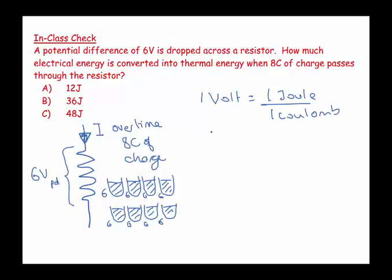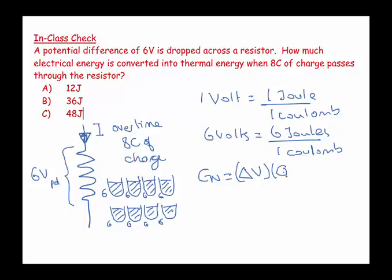would mean that 6 volts is equal to 6 joules per coulomb. So in this case, I have energy is equal to my potential difference multiplied by my charge. So I can